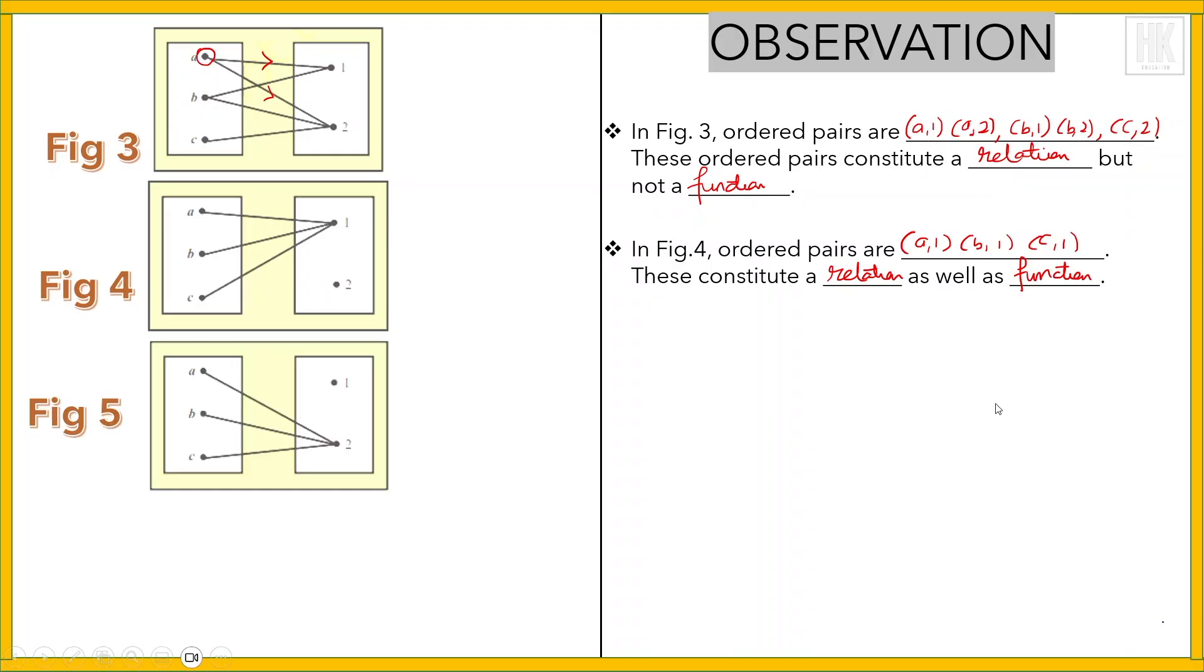Next, in the third figure, the ordered pairs are (a,2), (b,2), and (c,2). These ordered pairs constitute a relation as well as a function.